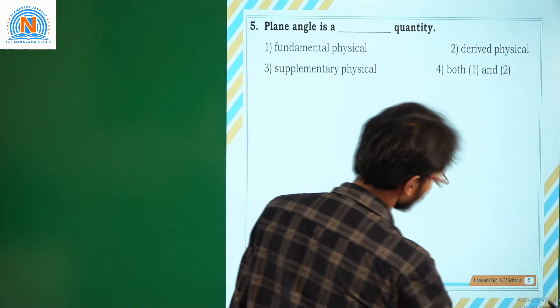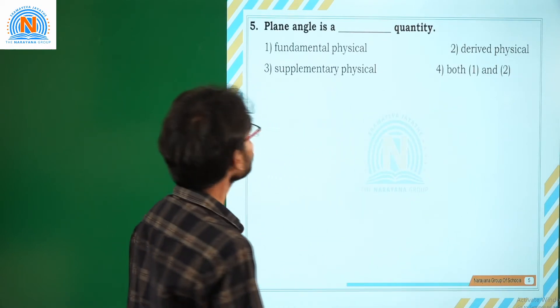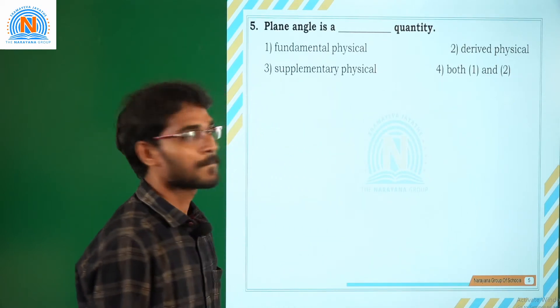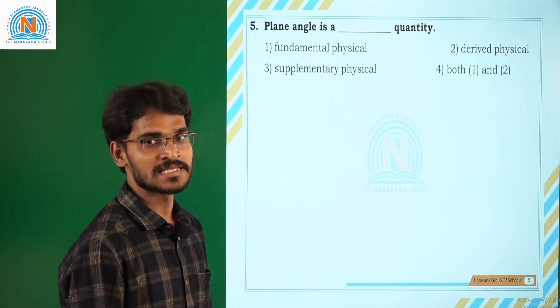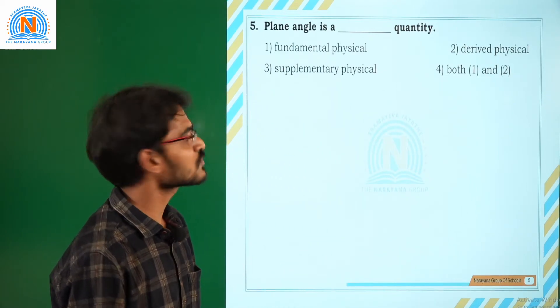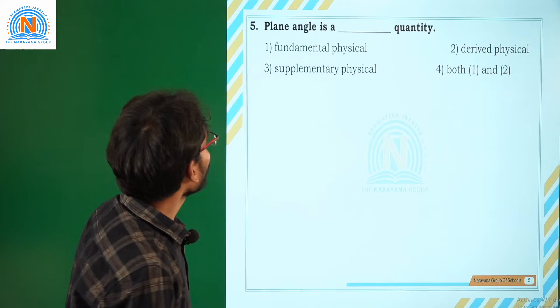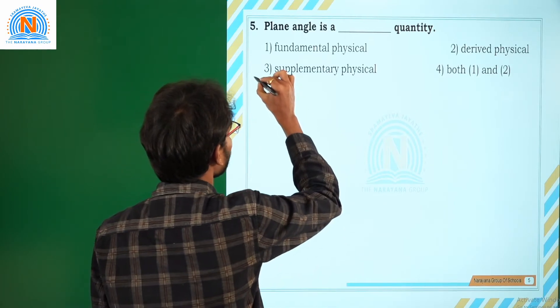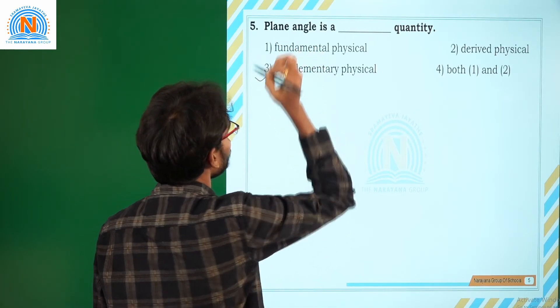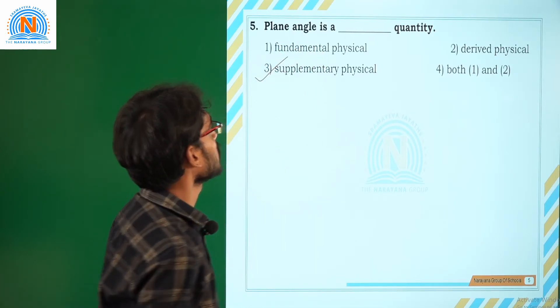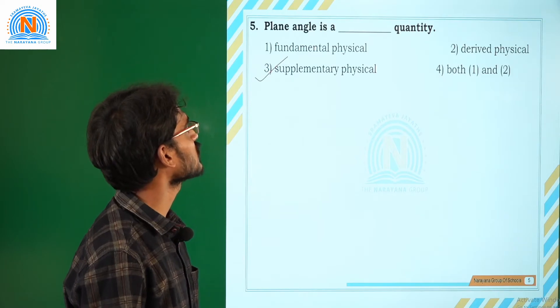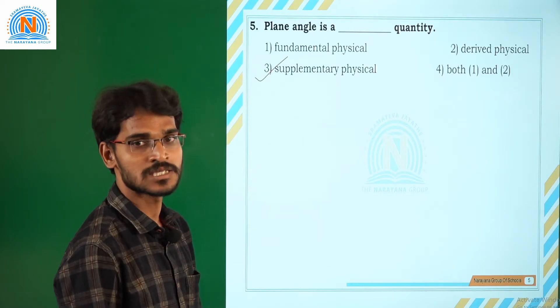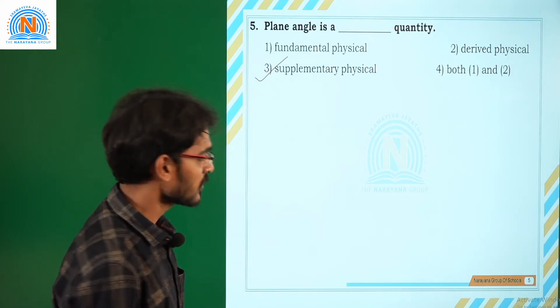Next, move to another question. Plane angle is a dash quantity. Plane angle is a supplementary physical quantity. So the correct option for this question is 3.